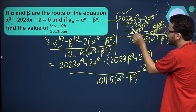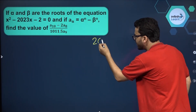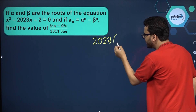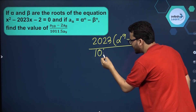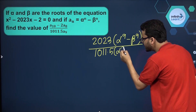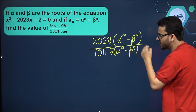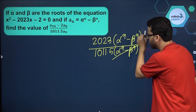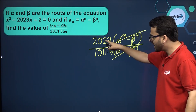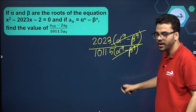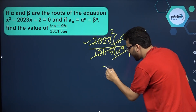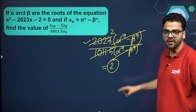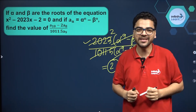Taking 2023 as common in the numerator, we get 2023 times (alpha to the power 9 minus beta to the power 9) divided by 1011.5 times (alpha to the power 9 minus beta to the power 9). The common factor cancels out, giving us 2023 divided by 1011.5. Since 2023 is exactly 2 times 1011.5, the final answer is equal to 2.